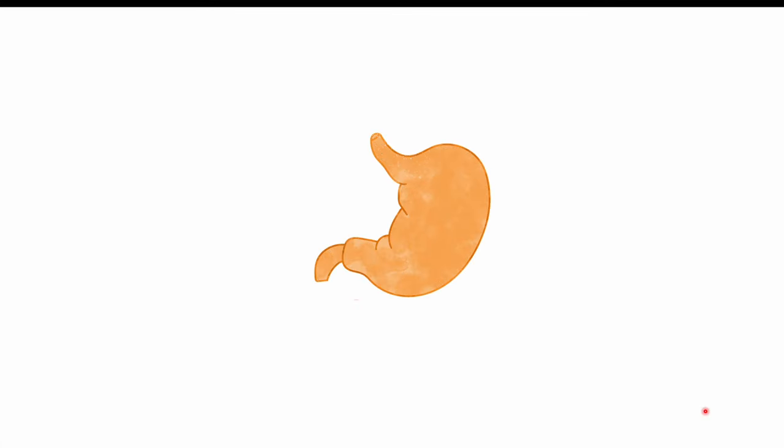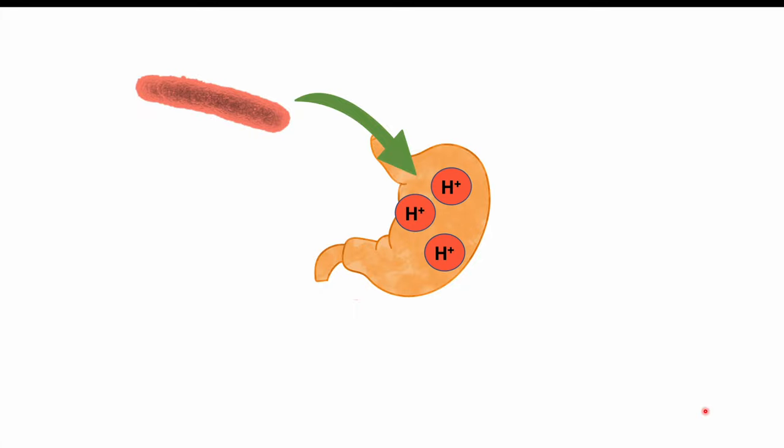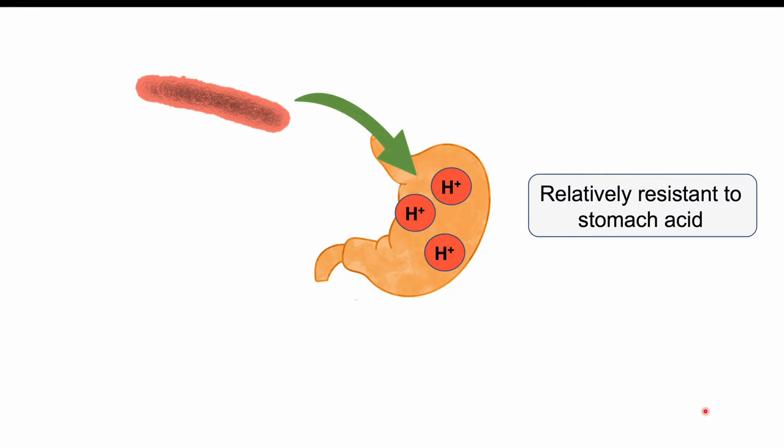When an individual consumes contaminated food or water, the bacteria enters their stomach. The acidity of the stomach normally takes care of most microbes, but Shigella species are relatively resistant to stomach acid, meaning they can survive it.